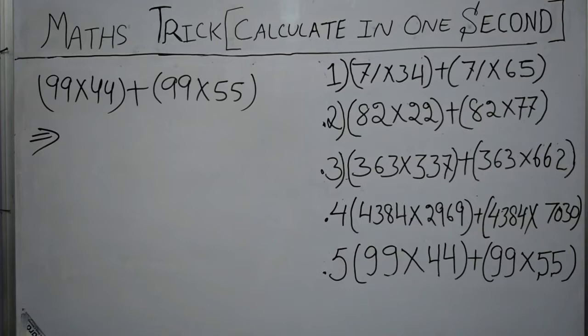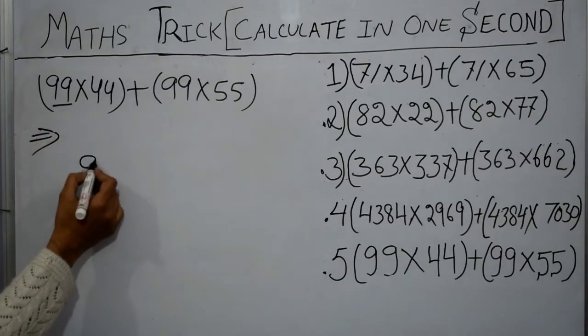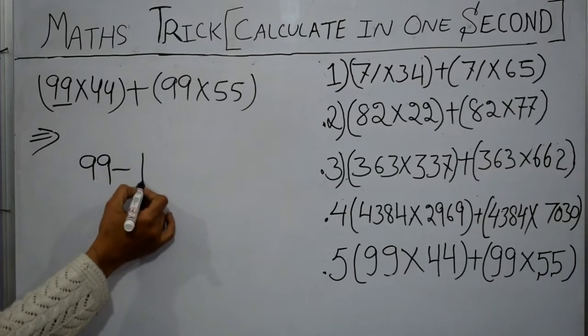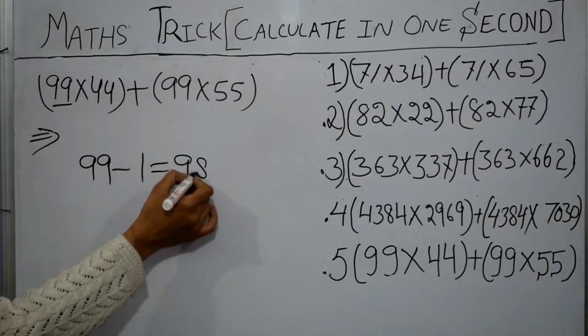Next sum is again of two digits. What we will do? We will look at the first number. First number is 99. Subtract 1 from 99, we got 98.